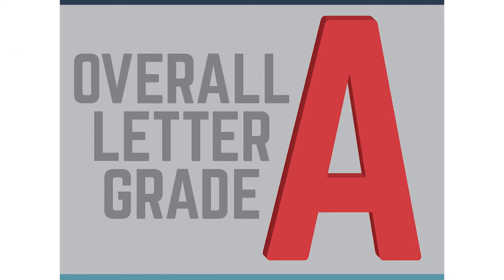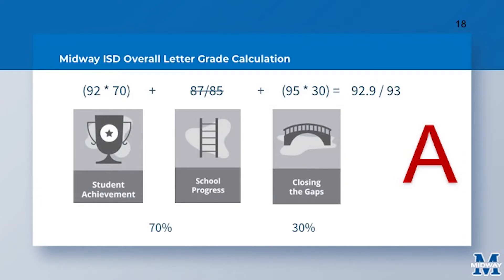For example, let's take a look at this slide and walk through Midway ISD's overall letter grade from the 17-18 school year. In the student achievement domain, Midway's score was a 92. In the school progress domain, the district scored an 87 in academic growth and scored an 85 in relative performance. Since student achievement has the higher score, we calculate the 92 at 70% of our overall letter grade. Midway ISD scored a 95 in the closing the gaps domain, which is measured at 30% of our overall letter grade. Adding those two components together, Midway ISD earned a grade of 93, which is an A letter grade.